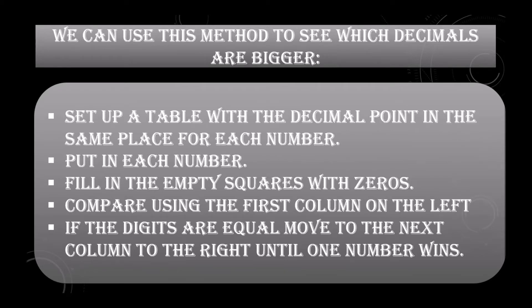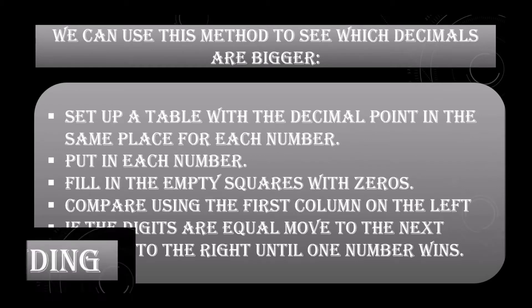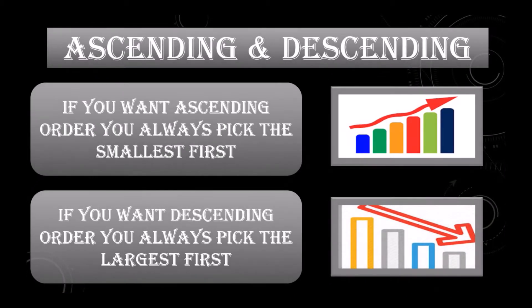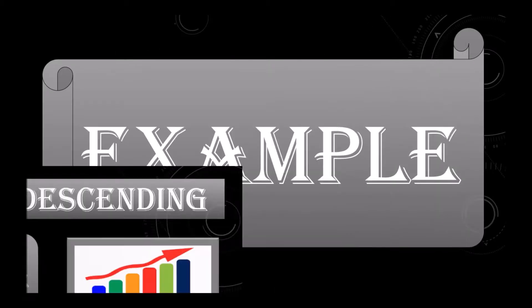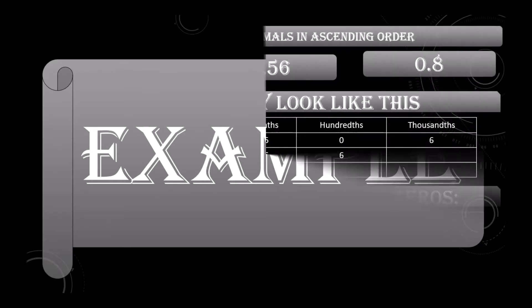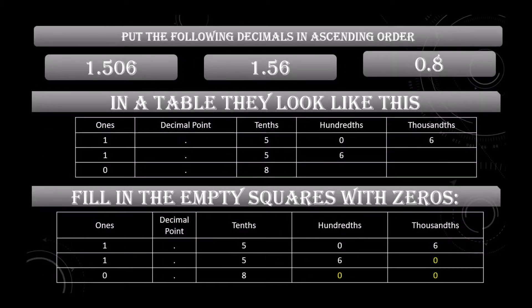If the digits are equal, move to the next column to the right until one number wins. For ascending and descending order: if you want ascending order you always pick the smallest first; if you want descending order you always pick the largest first. Let's see with an example — put the following decimals in ascending order: 1.506, 1.56, and 0.8.